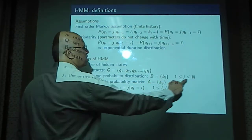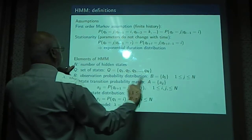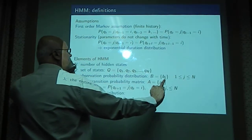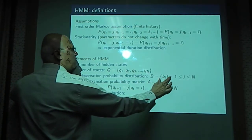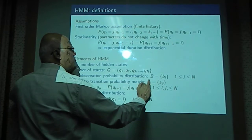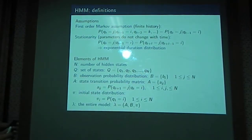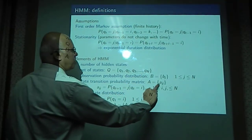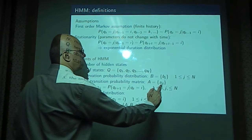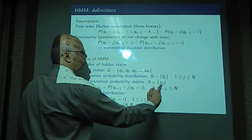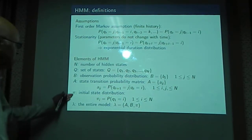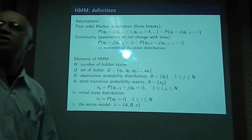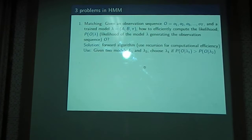There are capital N states, and in each state there is one probability distribution B1, B2, up to BN. The set of all these probability distributions is denoted by capital B. The state transition probability matrix, with elements A_ij, denotes the probability of making a transition from state i to state j. The initial probability distribution phi — all these parameters have to be estimated.